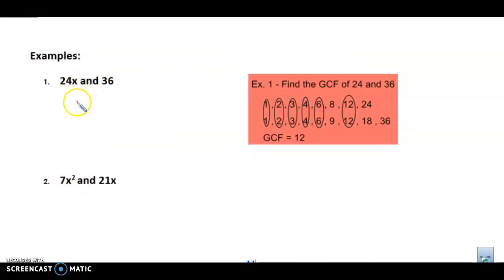All right, so 24x and 36. If I find the greatest common factors of 24 and 36, they've done that here for us. They've got 1s, 2s, 3s, 4s, 6s, and 12s. 12 is your greatest common factor of these two numbers. And this has an x, and this does not have an x. So 12 is the greatest common factor of these two terms.